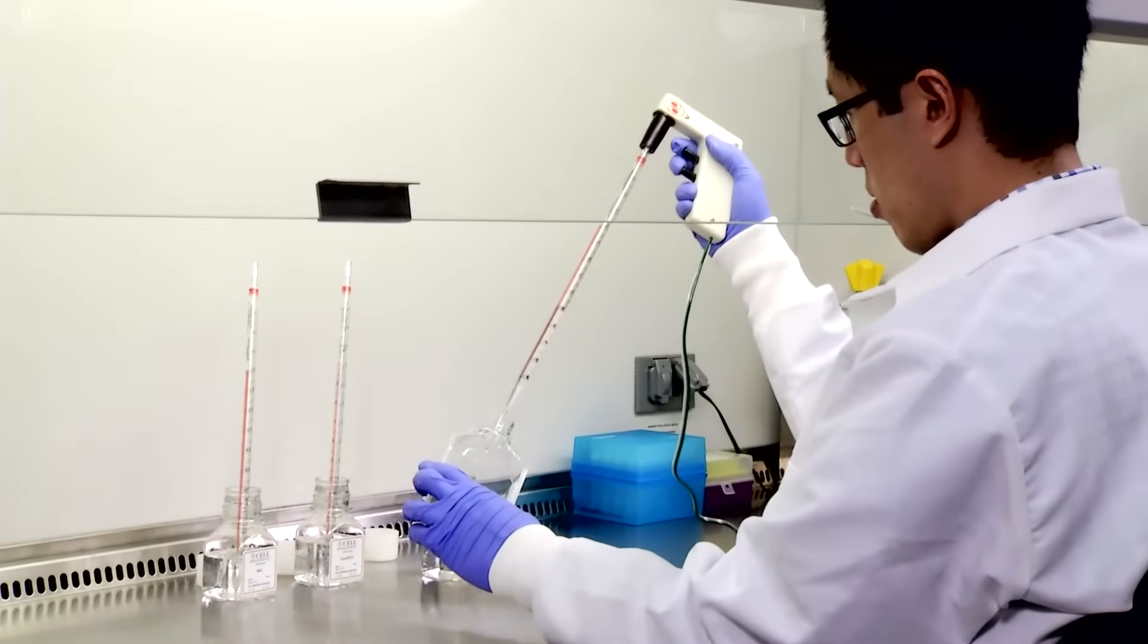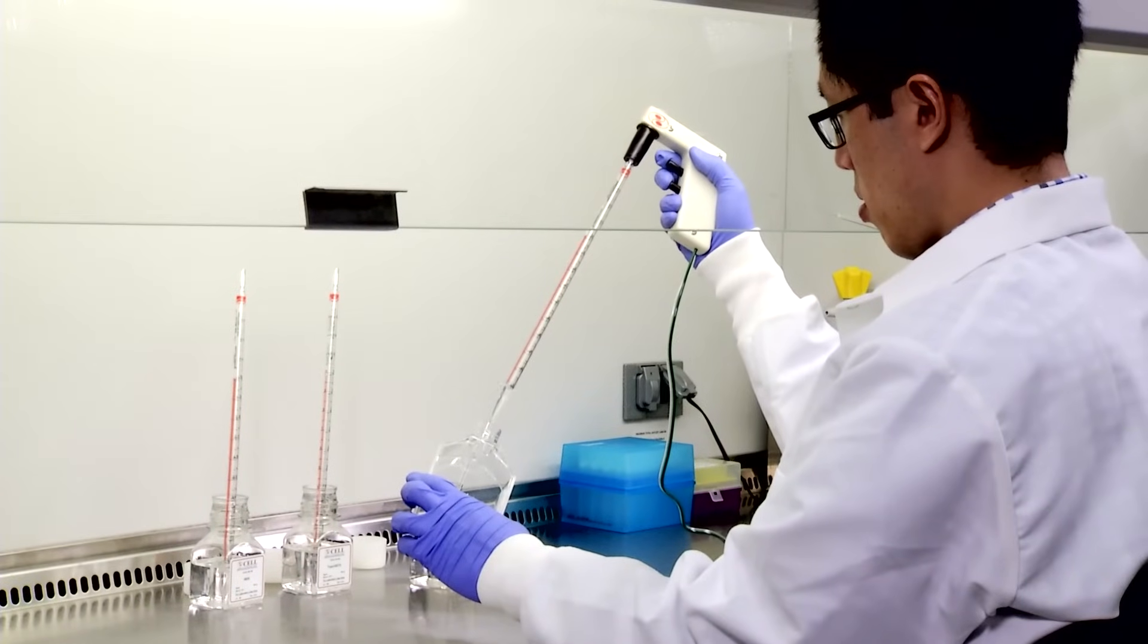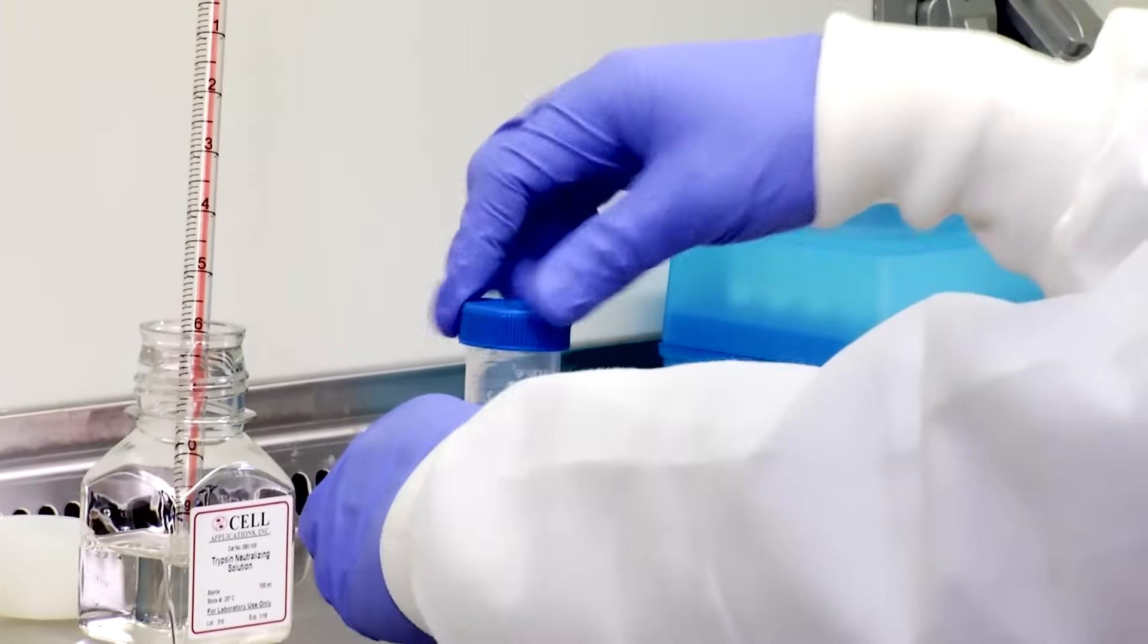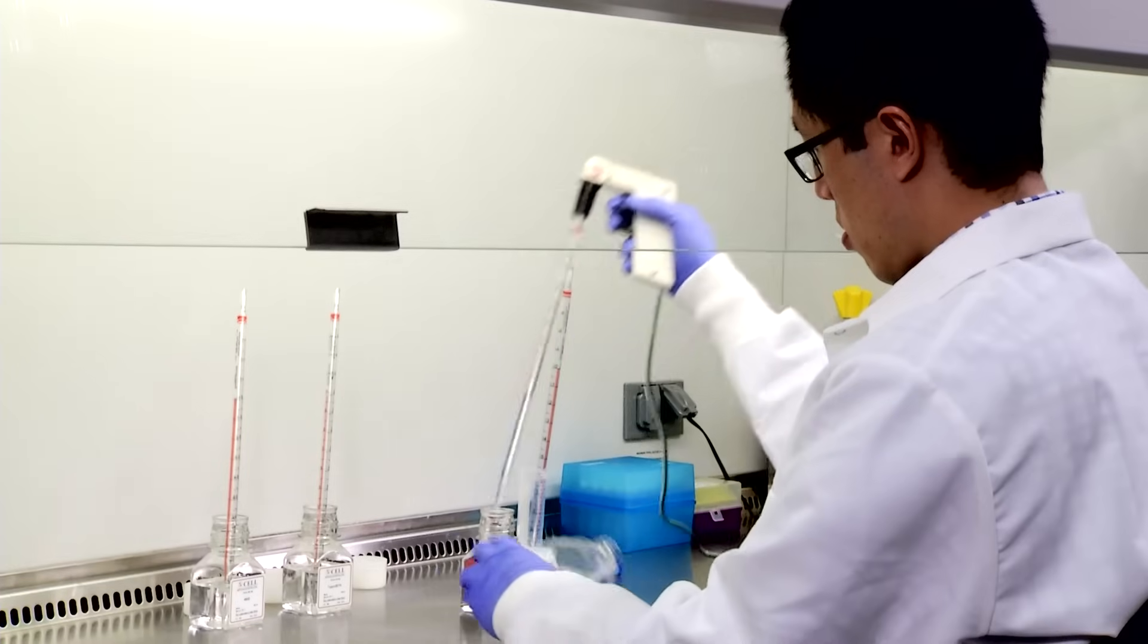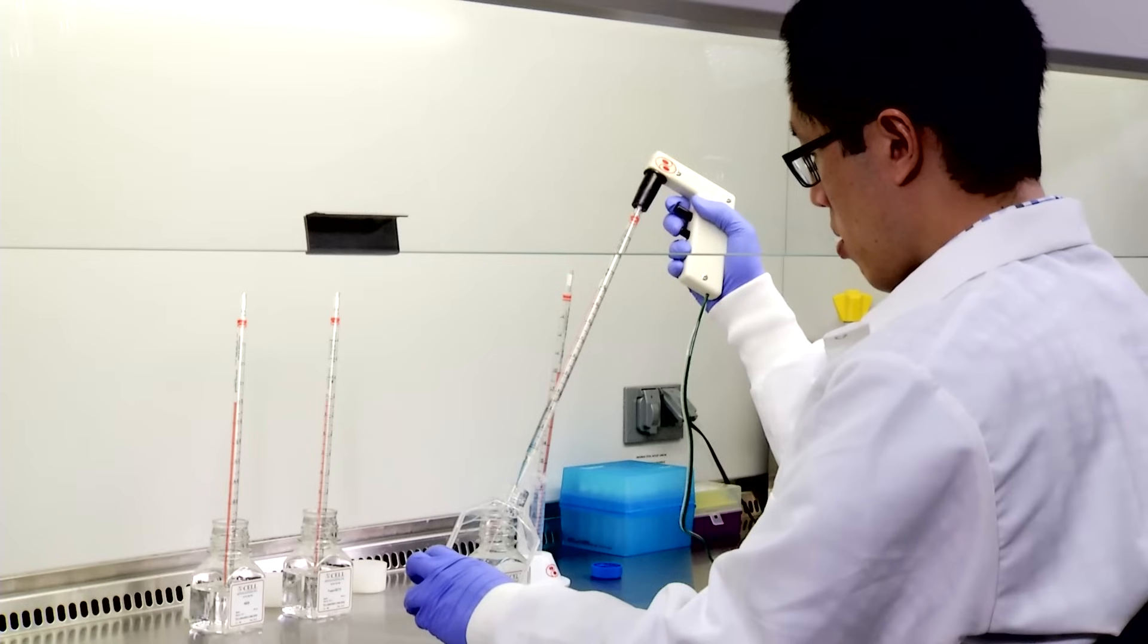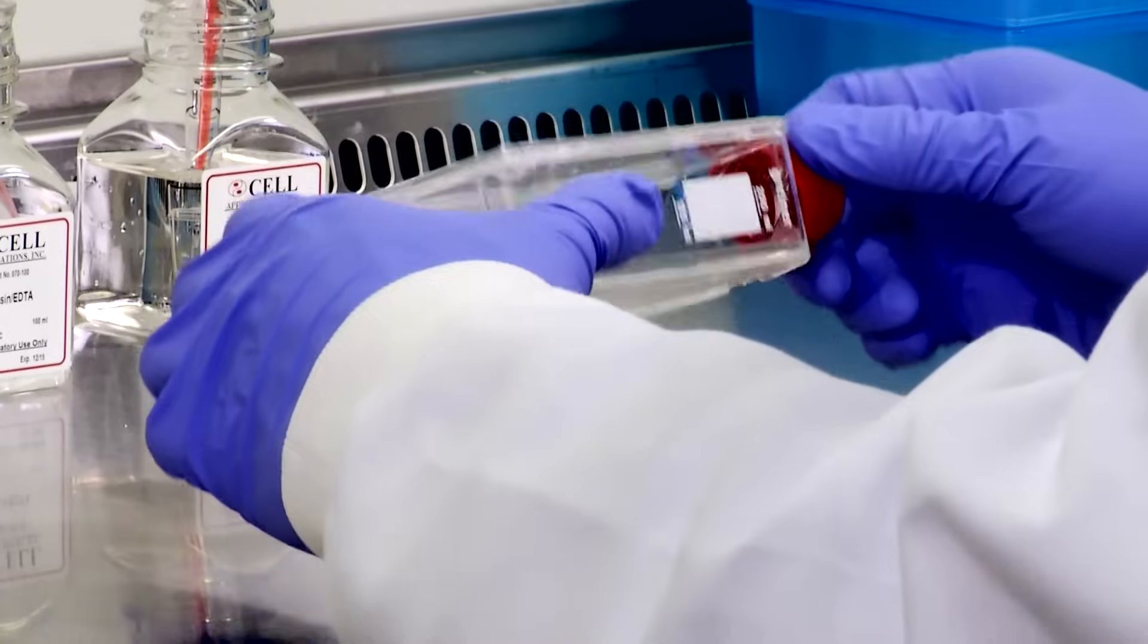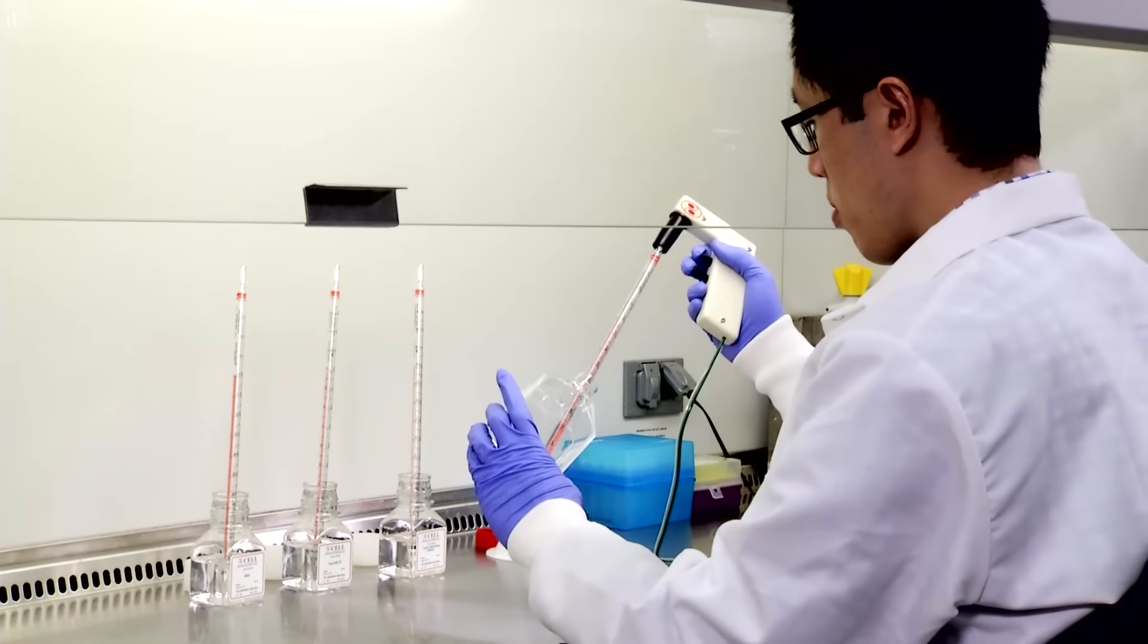Add 5 ml trypsin neutralizing solution to flask. Transfer cell suspension to sterile 50 ml centrifuge tube. Add another 5 ml trypsin neutralizing solution to flask. Rock gently and transfer remaining cells to same tube.